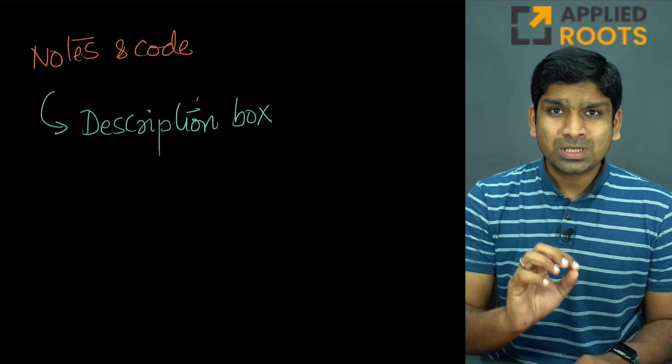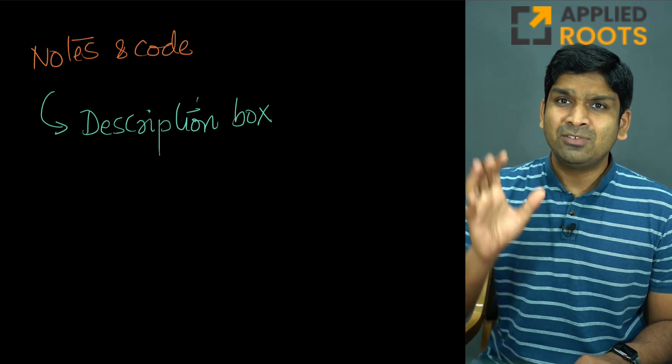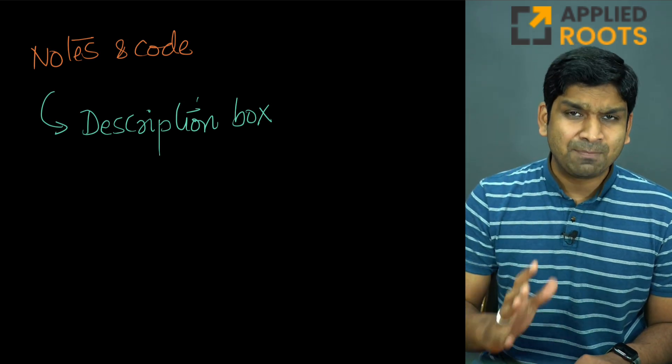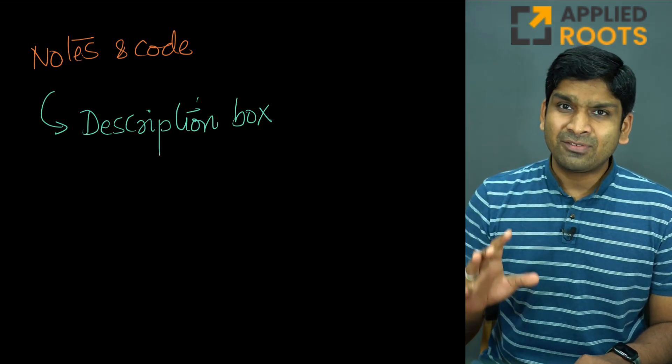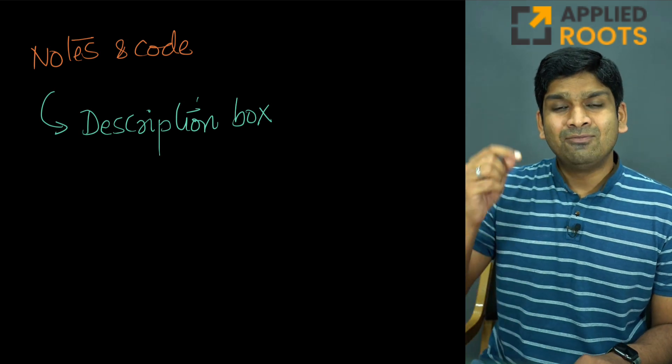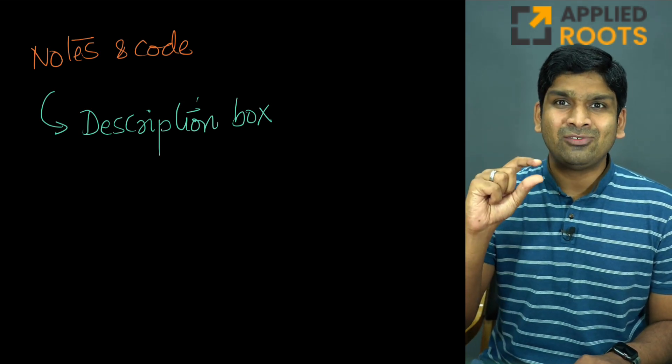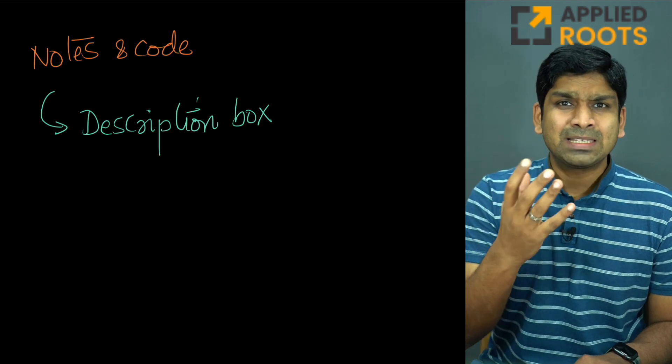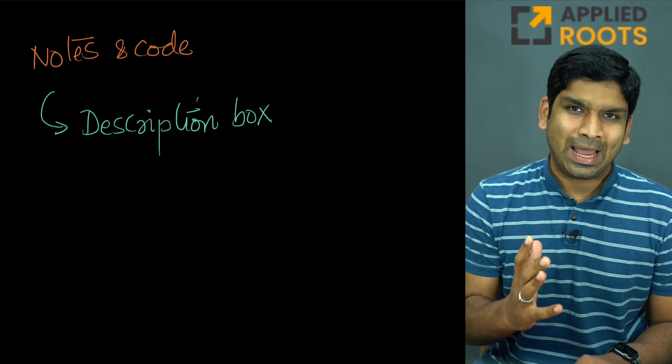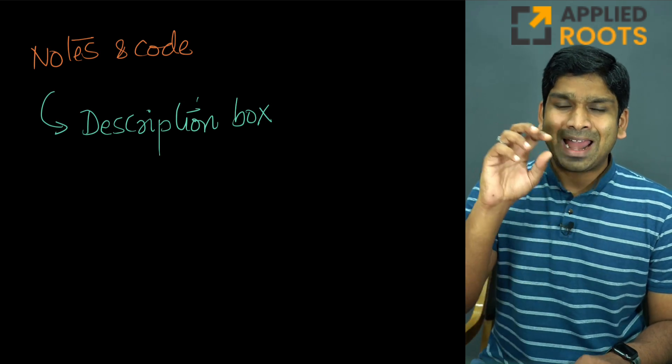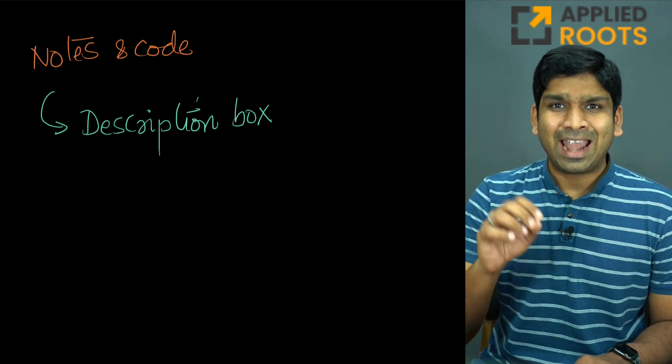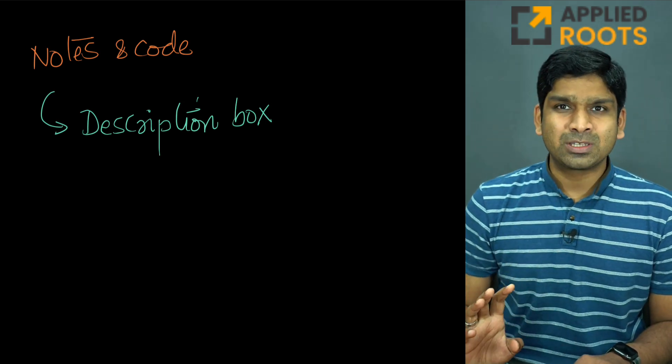The notes and the code snippets - we'll share a PDF, about 100 pages long. This PDF has all the notes. Within the PDF itself, you'll also have links to the code, basically iPython notebooks on Google Colab. We will provide the notes and the code, the link to the whole PDF and the code in the description box below so that you can use it.